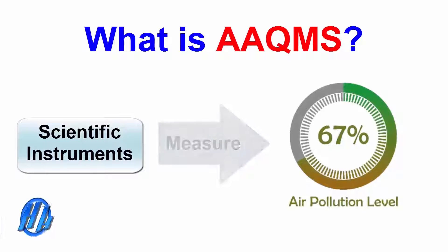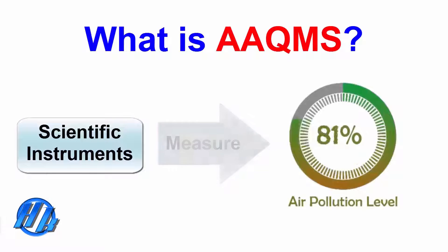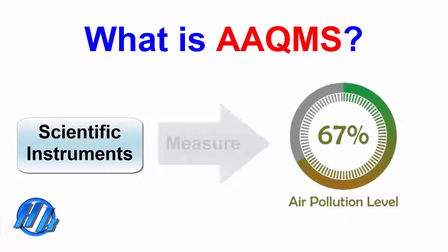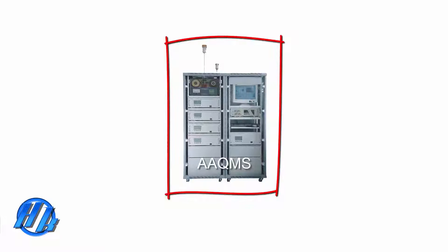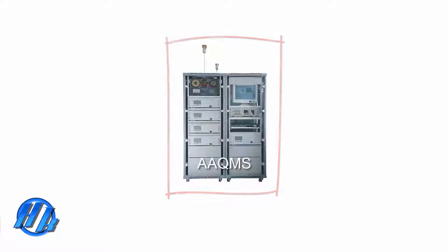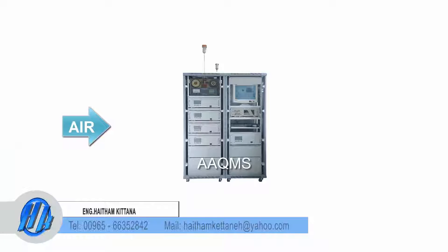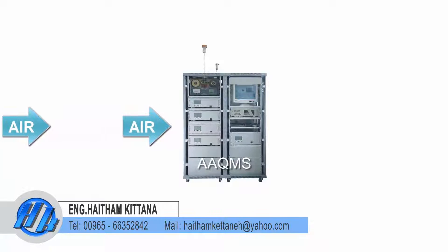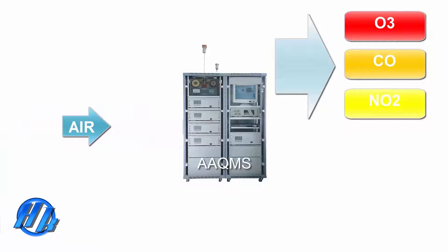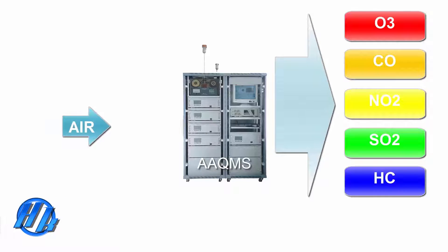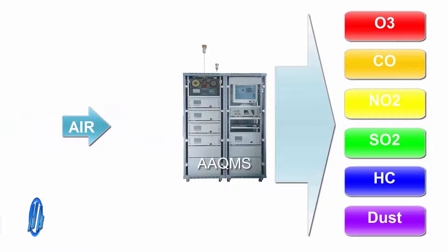Ambient air quality monitoring stations are scientific instruments that measure the level of air pollution. An ambient air quality monitoring station continuously collects samples of ambient air and measures different harmful gases and parameters, such as ozone, carbon monoxide, nitrogen dioxide, sulfur dioxide, hydrocarbons, dust level, and more.